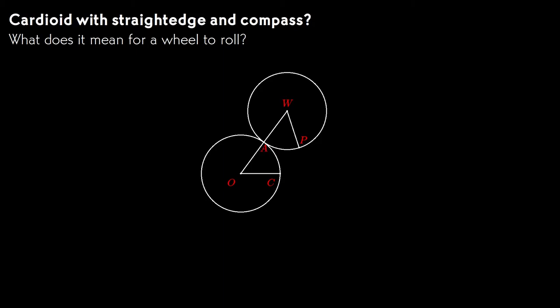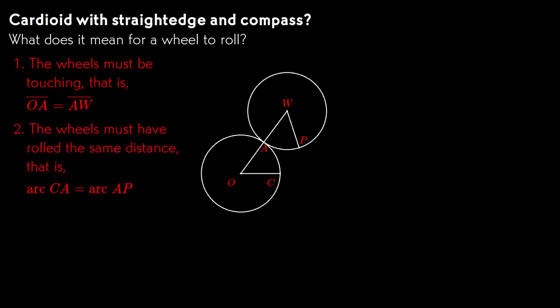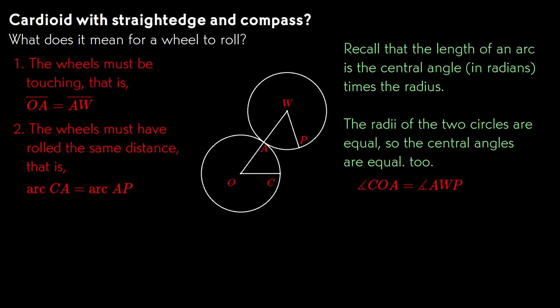Let's start by examining what it means for the wheel to have rolled a given distance. We can describe it with some basic geometric facts. The wheels have to stay in contact, so the centers are connected with a straight line, and the radii are of course equal. The wheels also have to roll to the same distance, which means the length of the arcs from the starting point of contact to the current point of contact also must be equal. Remember that if we measure angles and radians, the arc length is the central angle times the radius. Since the arc lengths and radii are both equal, the central angles have to be equal too.